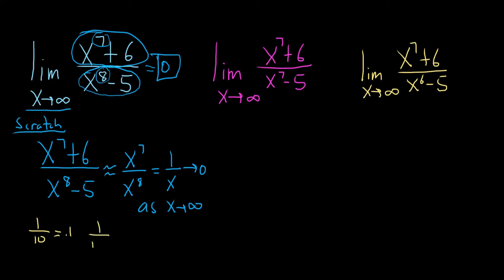And think about 1 over 1000, right? That's 0.001. So the bigger that the number gets on the bottom, the smaller that the fraction gets.